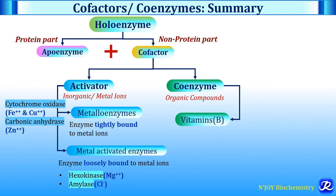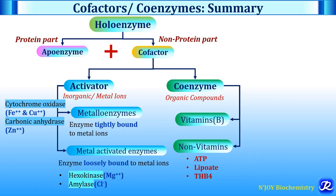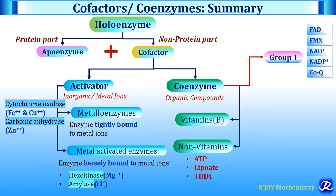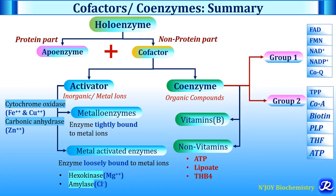Coenzymes are derived from vitamin B. Some coenzymes are not derived from vitamins, for example ATP, lipoate, and tetrahydrobiopterin. Coenzymes can be divided into two groups: Group 1 coenzymes are involved in transfer of protons or electrons — FAD, FMN, NAD+, NADP+, and coenzyme Q. Group 2 coenzymes are involved in transfer of groups other than protons and electrons — thiamine pyrophosphate, coenzyme A, biotin, PLP (pyridoxal phosphate), tetrahydrofolate, and ATP, which transfers a phosphate group.